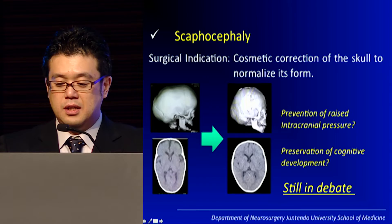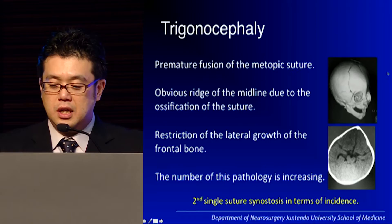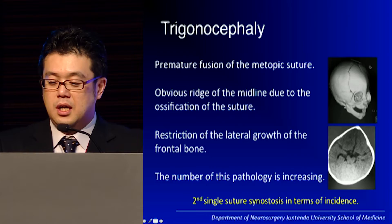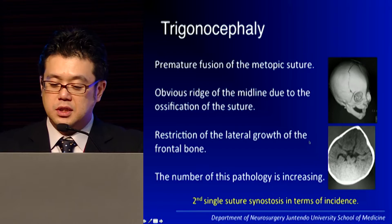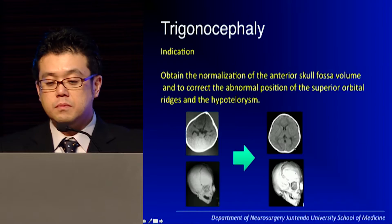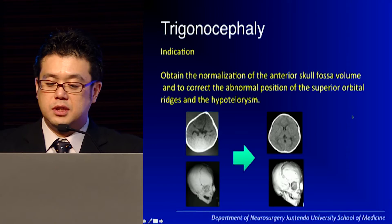Moving on to trigonocephaly — it's a premature fusion of the metopic suture. An obvious ridge of the midline due to ossification of the suture is seen, and you can easily diagnose the child when they come into your outpatient office. There is a restriction of lateral growth of the frontal lobe bone, and interestingly the number of this pathology is increasing. It is now the second most common single suture synostosis in terms of incidence. The surgical indication is to obtain normalization of the anterior skull fossa volume and to correct the abnormal position of the superior orbital ridges and hypertelorism, which I will talk about later.